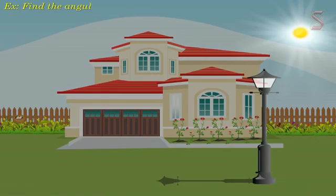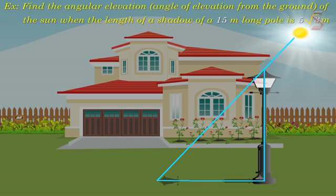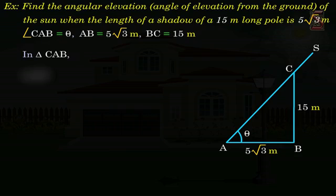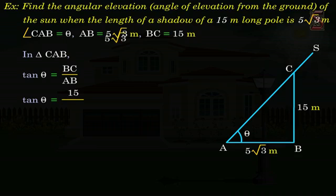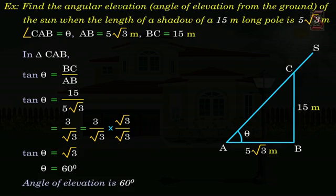Example 3: Find the angular elevation (angle of elevation from the ground) of the sun when the length of the shadow of a 15-meter long pole is 5 root 3 meters. Solution. Let S be the point of the sun and BC be the pole. Let AB be the length of the shadow of the pole. Let the angle of elevation of the sun be theta. Given AB is equal to 5 root 3 meters and BC is 15 meters. In triangle CAB, tan theta is equal to BC by AB, which is 15 by 5 root 3, equal to 3 by root 3, equal to root 3. Since tan 60 is root 3, theta is 60 degrees. Hence, the angle of elevation is 60 degrees.